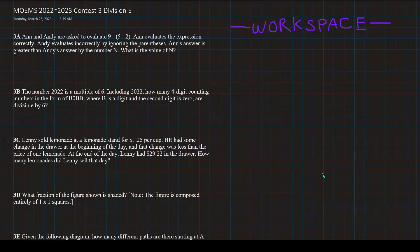Alright, so here is 3A. Ann and Andy are asked to evaluate 9 minus parentheses 5 minus 2. Ann evaluates the expression correctly. Andy evaluates incorrectly by ignoring the parentheses. Ann's answer is greater than Andy's answer by the number n. What is the value of n?